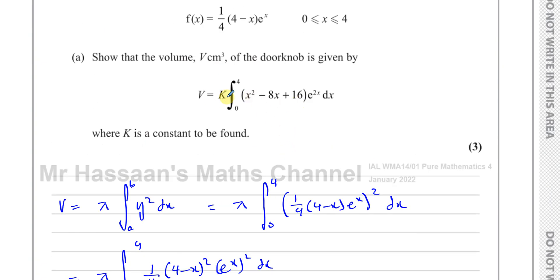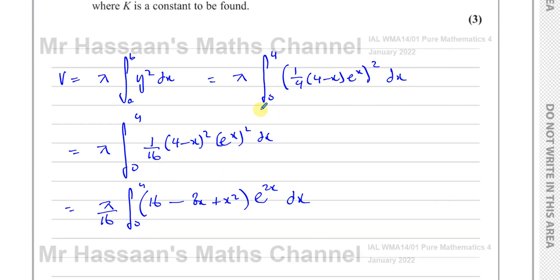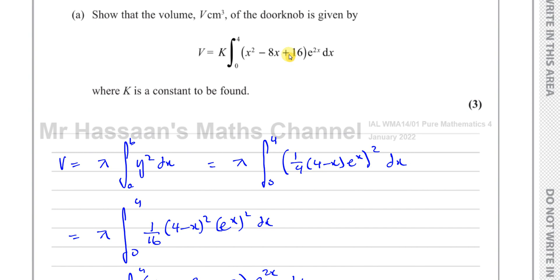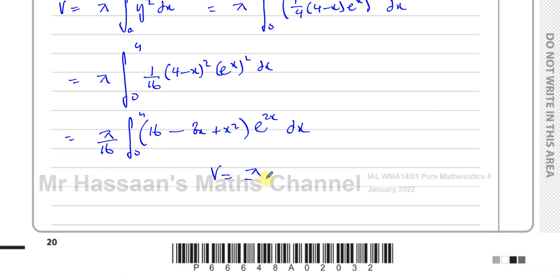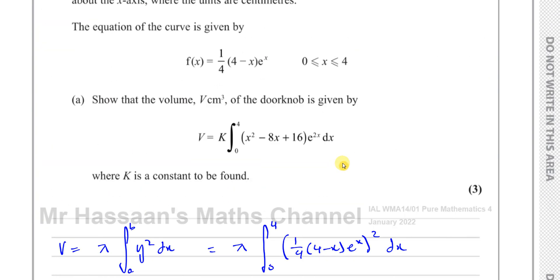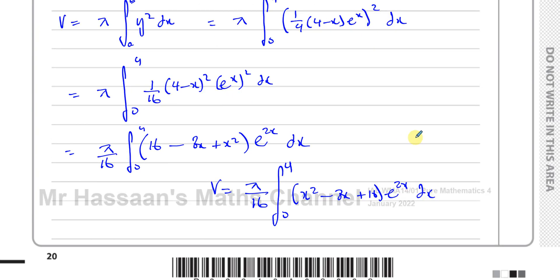They didn't ask us to integrate it, just to show it becomes the same. They're basically the same — I just rewrite it with x squared minus 8x plus 16. So v equals some constant, which is π over 16, times the integral between 0 and 4 of x squared minus 8x plus 16, times e to the power of 2x, integrated with respect to x. And we can see that k is equal to π over 16.